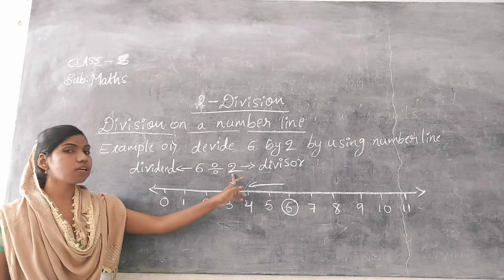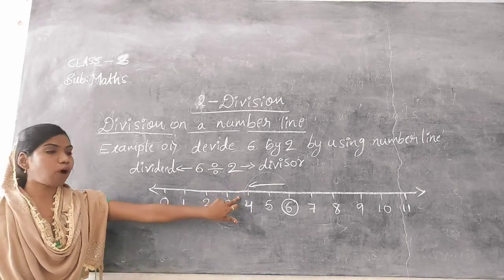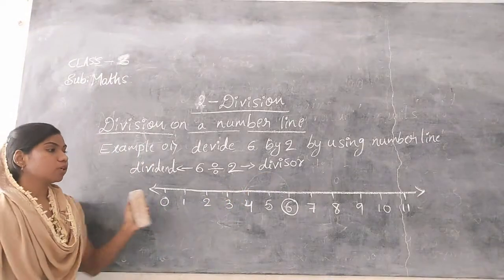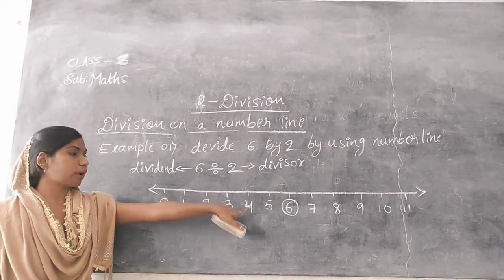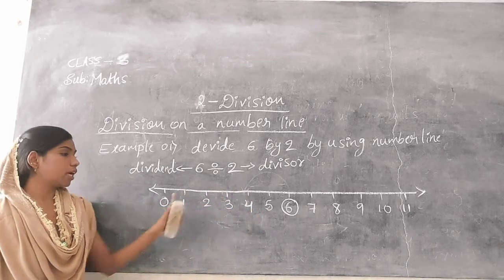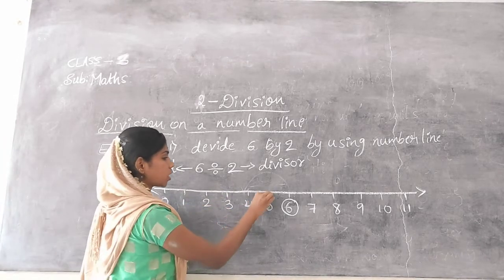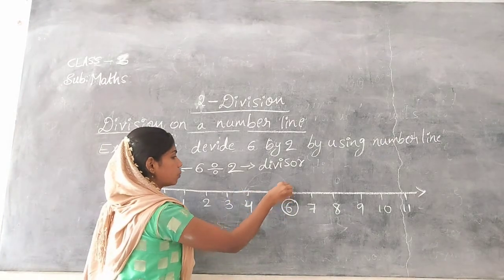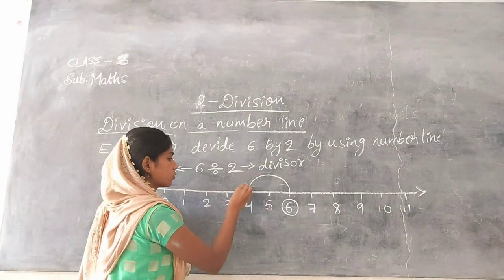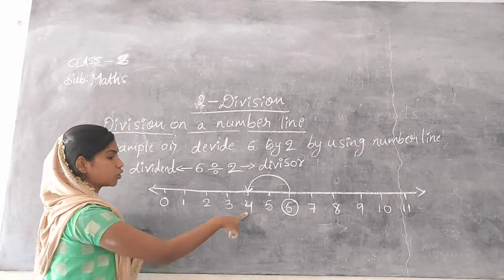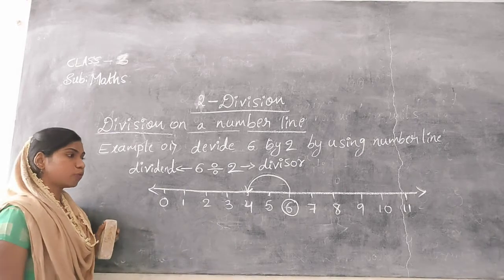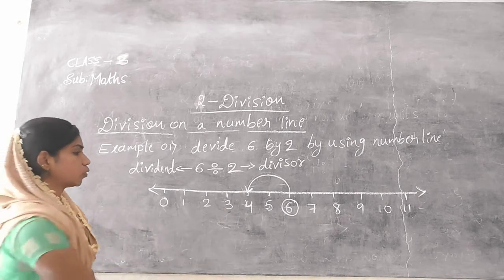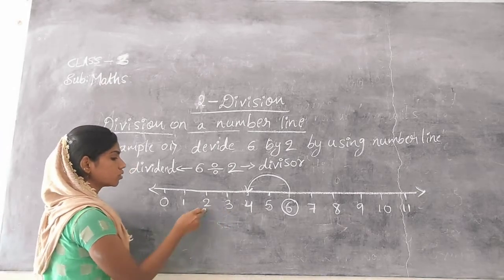From the number 6, jump towards the left side by taking 2 steps. Why do we take only 2 steps? Because the divisor is 2. So in each jump, we have to take 2 steps. Jump 1: from 6, step 1, step 2 — I reach number 4. Jump again, taking 2 steps from 4: step 1, step 2.